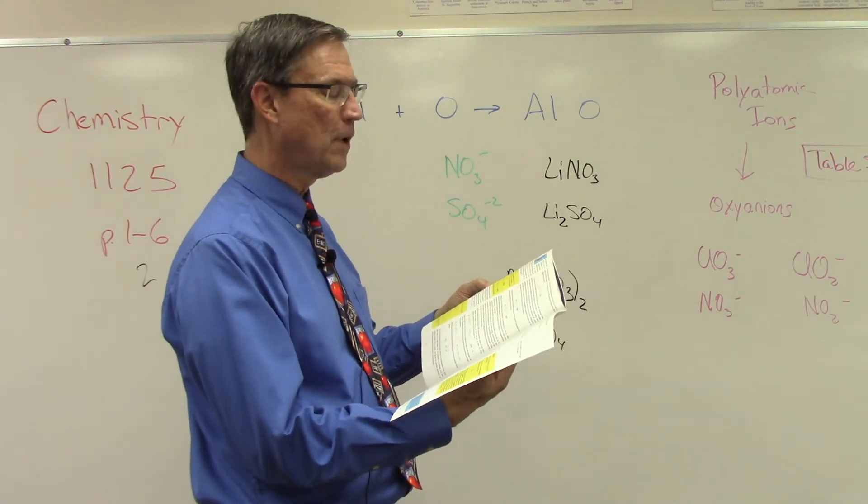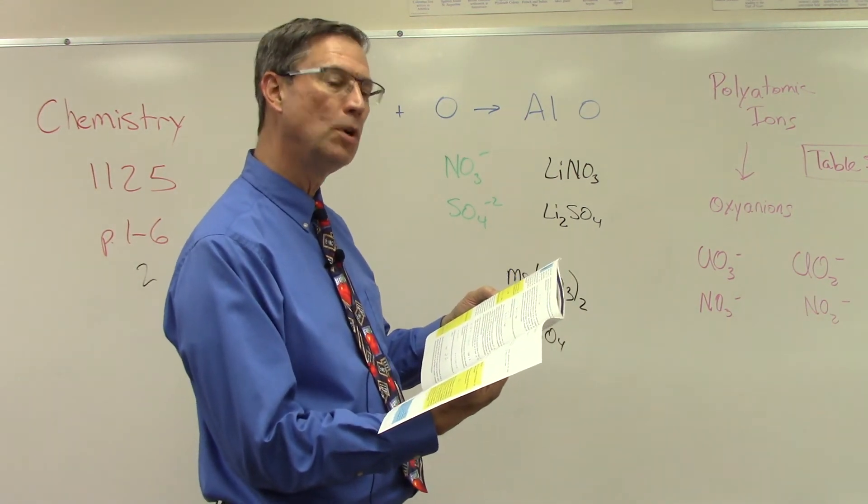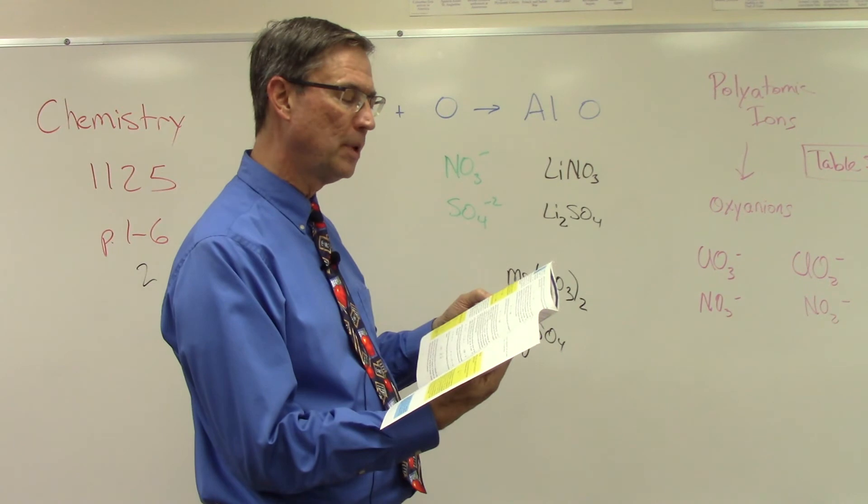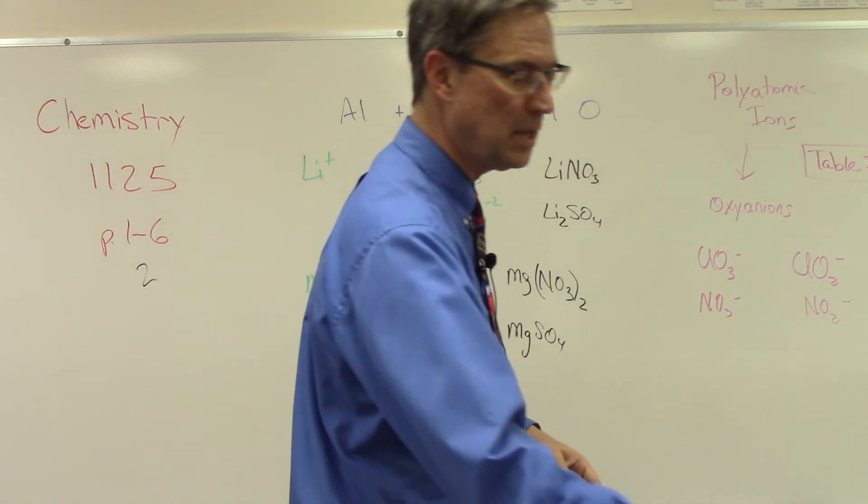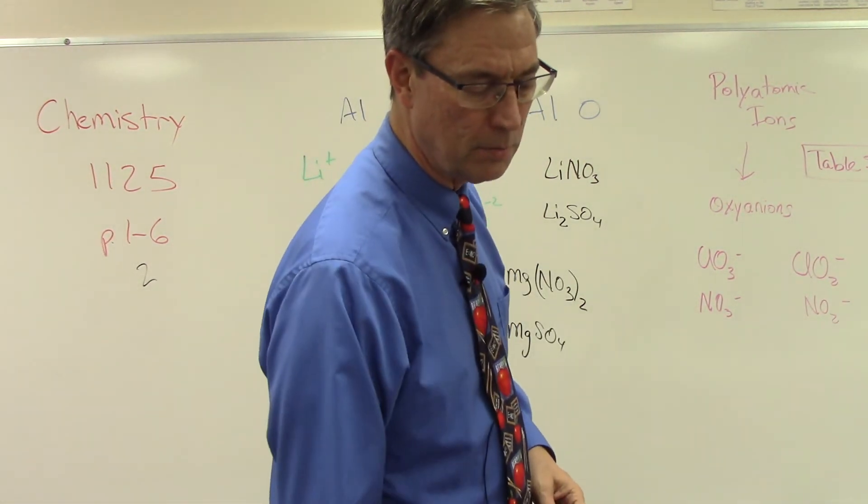I think it was on page five at the top of the page. Put a smiley face at the very top of page five. The second, perhaps easier way to determine the empirical formula is to use the crossover method. Yes, let's talk about the crossover method.